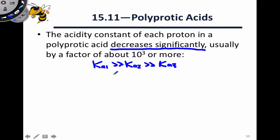Essentially, this is how we define Ka1, Ka2, and Ka3. The 1, 2, and 3 refer to the first, second, and third deprotonation. If we think of the first deprotonation as the easiest or most favored, of course it's going to have the largest K value, and Ka2 and Ka3 from there are going to have progressively smaller K values.